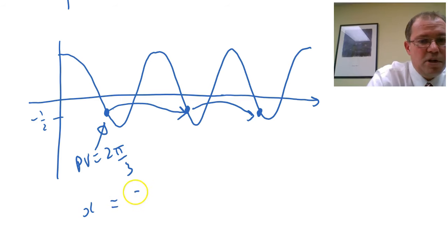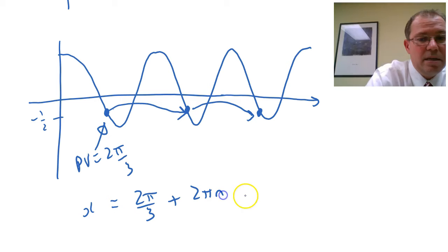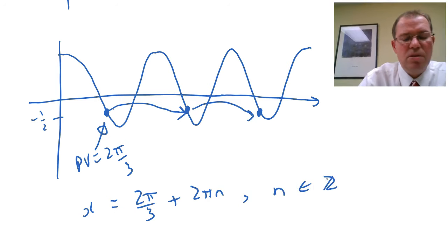So we know a formula already using our principal value, two pi over three plus two pi n, where n is a counting integer, so it can be zero, plus or minus one, plus or minus two, etc.